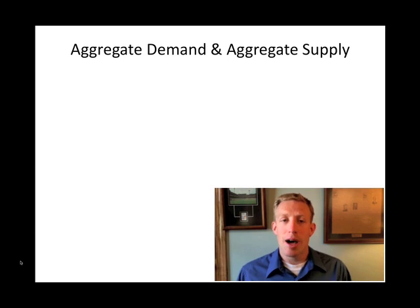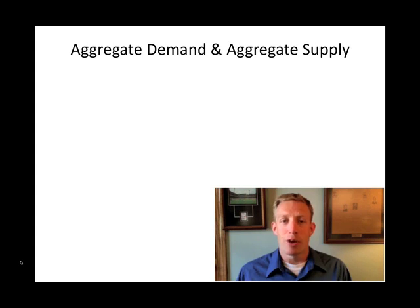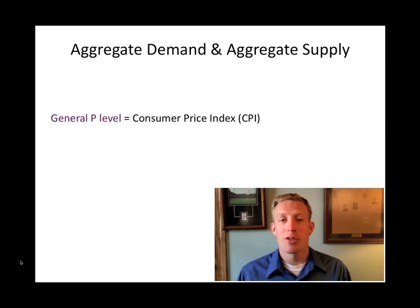When we look at the model of aggregate demand and aggregate supply, we have to be careful, because the price of a car versus the price of a computer is very, very different. So instead of using price, we use something called the price level — the general price level. Oftentimes this is the consumer price index, or CPI, which is the way we typically measure prices across the economy. If the CPI goes up, it means there's inflation, and if it goes down, there's deflation.